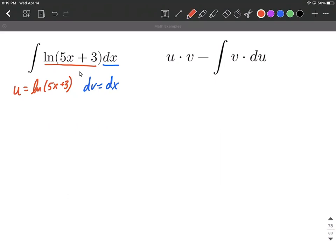So we'll get a du over here and the derivative of natural log of 5x plus 3. Well, we're going to use the chain rule. So it's the natural log. The derivative is 1 over 5x plus 3. But then we have to multiply by the derivative of that inner function. So we multiply by 5 and then this is dx after all.